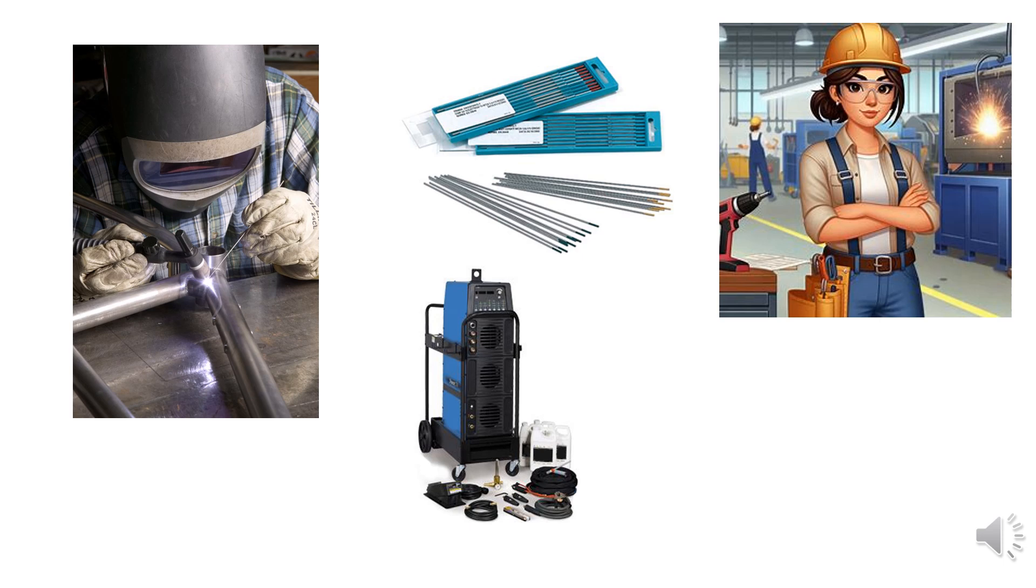Filler rods: Filler metal is typically unnecessary when welding light gauge materials with GTAW, as they tend to fuse easily. For thicker materials or thin materials needing reinforcement, filler rods should be used. Special filler rods for GTAW are available, so oxyacetylene welding rods should not be used as they can contaminate the tungsten electrode. Filler rods should match the base metal composition. For instance, use carbon steel rods for low carbon steel and aluminum rods for aluminum. Additionally, since many different compositions of the same metal exist, select a filler rod with the same composition as the material being welded.